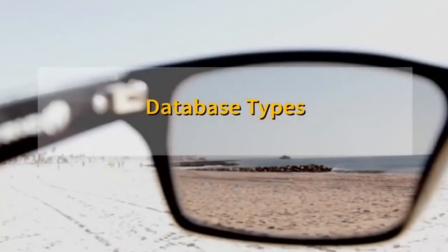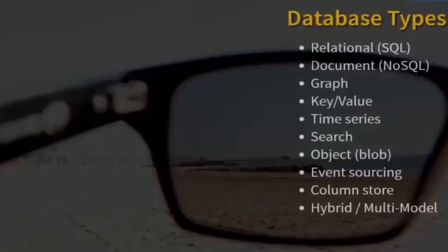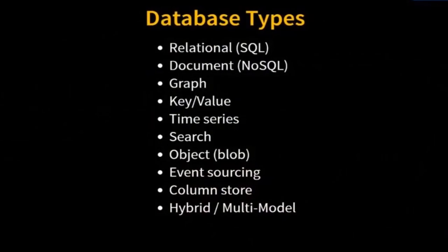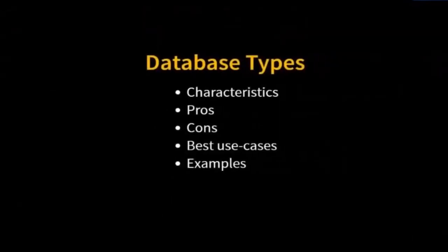Let's take a look at the different database types that we have. There's a lot to choose from: relational, document, graph, key-value, and we'll look at some other types you may not have heard of. In particular, let's look at hybrid and multi-model databases as well. As we look at each database type, we'll look at the characteristics, pros and cons, and when it is best to use this database type.